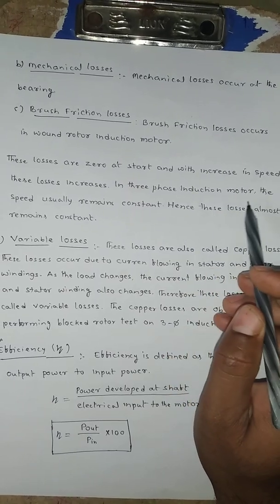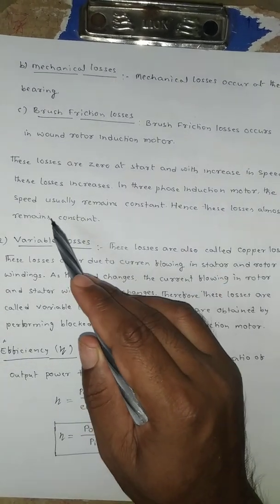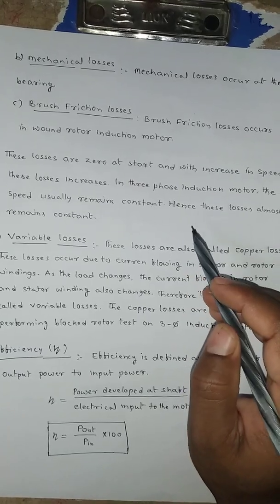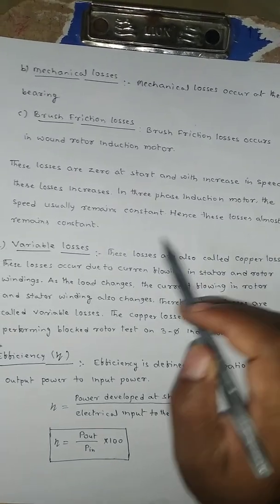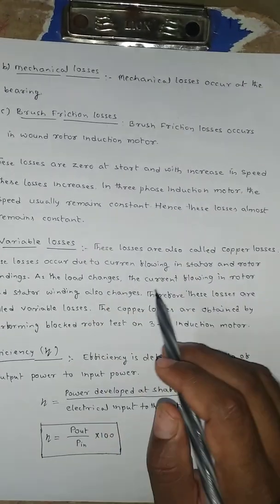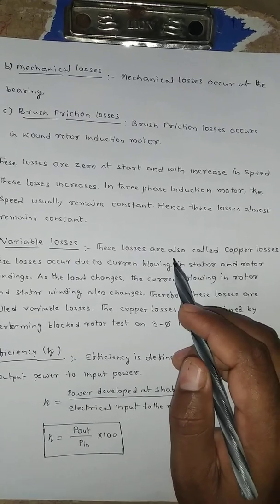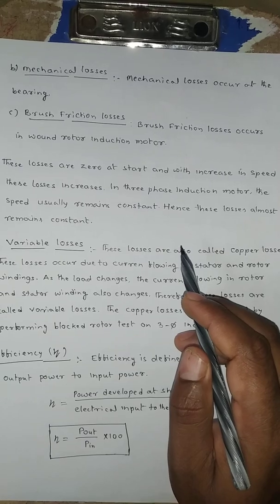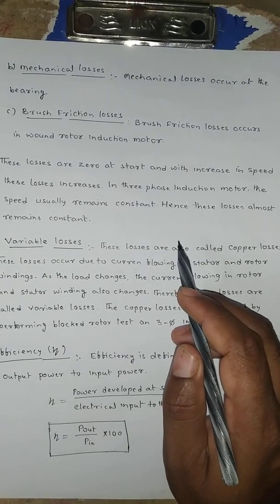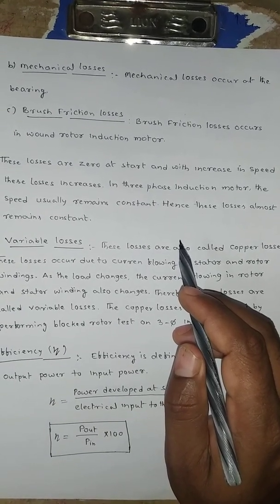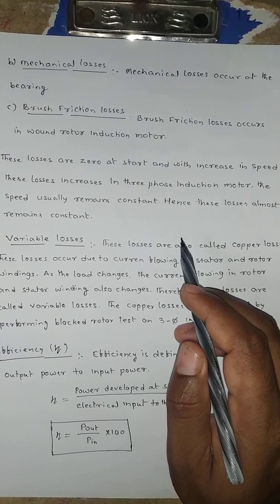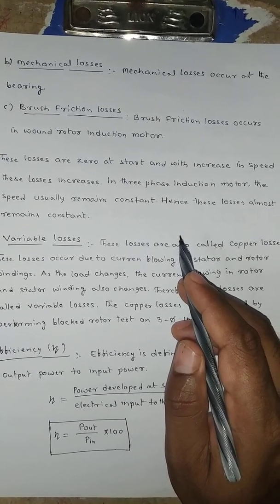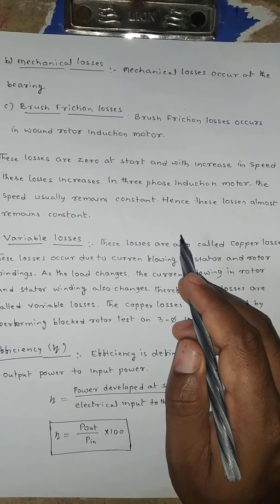In a three-phase induction motor, the speed remains almost constant — not at synchronous speed, but close to it. Since these losses depend on speed, and the speed is nearly constant, the mechanical and friction losses also remain approximately constant. Hence they are categorized as constant or fixed losses.